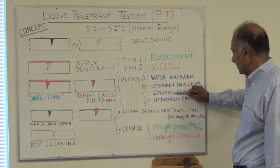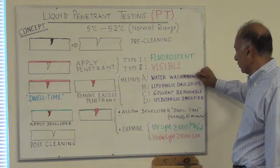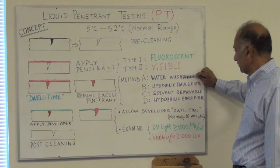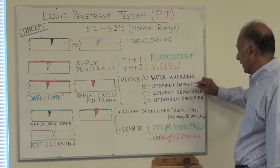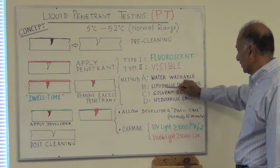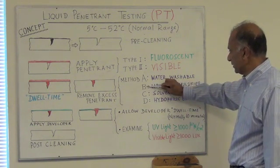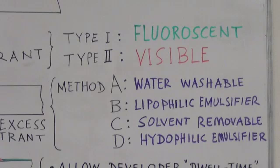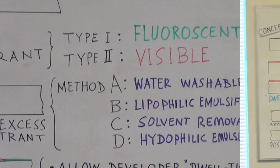The solvent removable method is Method C. The water washable method is Method A. The emulsifier method has two variants — Method B, which uses a lipophilic emulsifier, and Method D, which uses a hydrophilic emulsifier.